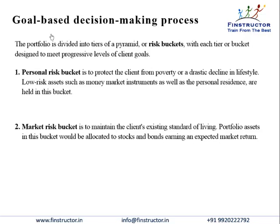To manage concentrated positions, what we can adopt is a process of goal-based decision making. This process says that an investor's portfolio should be divided into tiers of a pyramid — that is, divided into various risk buckets — with each tier designed to meet progressive levels of client goals. This slide is very important; make sure you understand this concept very well. Numericals may come from this, and item-set-based and asset-type questions are likely to come from these concepts.